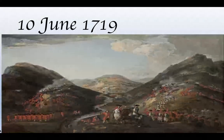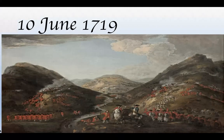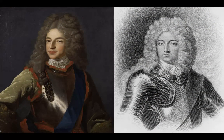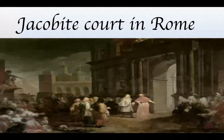On 10th June 1719, James Francis Edward Stewart landed in Scotland and attempted to start a rebellion, but it failed and the Jacobites were defeated at the Battle of Glenshiel. Both the Earl of Mar and James Francis Edward Stewart fled to France. In 1719, England made peace with France and the Stewarts were expelled from France, so James Francis Edward Stewart went to Rome, where he set up the Jacobite court.